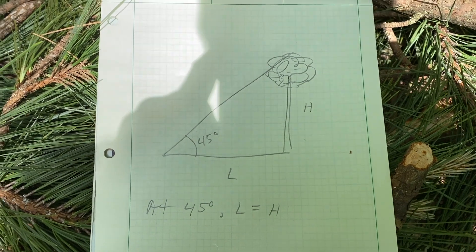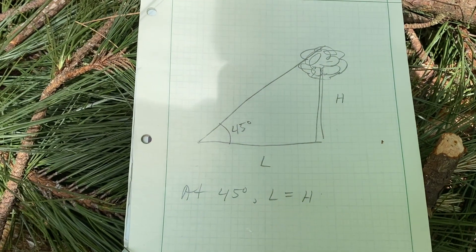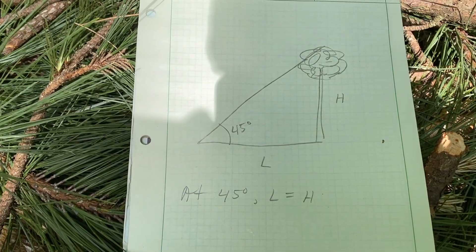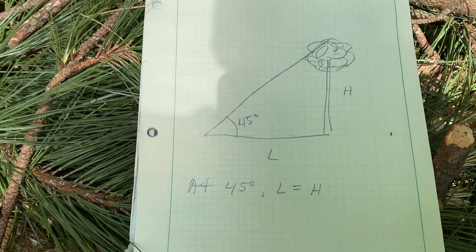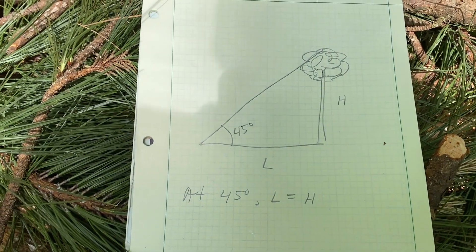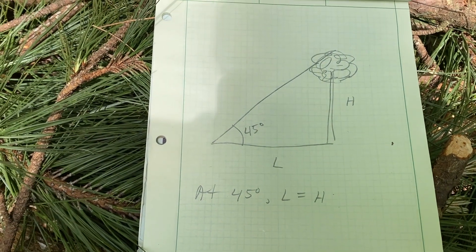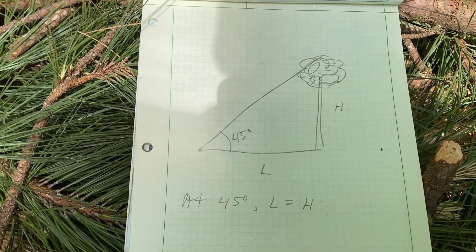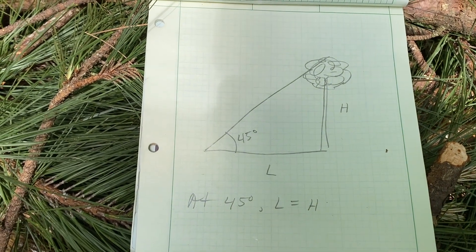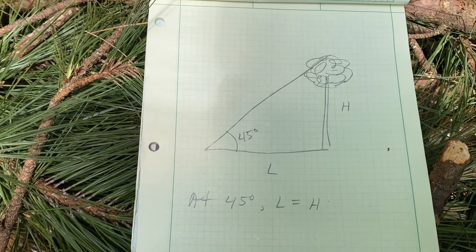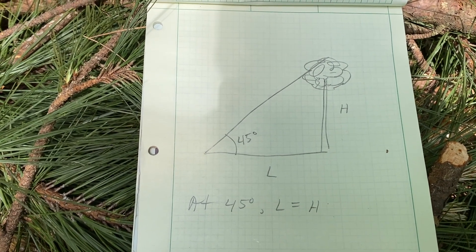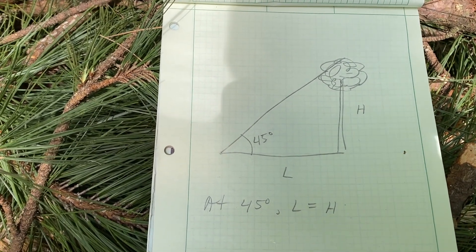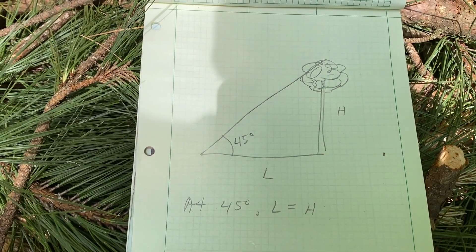An easy way to do that is to use the Theodolite app for iPhone or iPad and sight to the top of the tree. Theodolite has a lot of features — you can use it to measure the height of the tree, the distance to the tree from a certain location — but you don't need to do any of that for this simple test to check where a tree is going to fall.